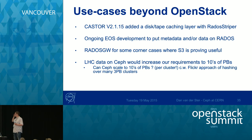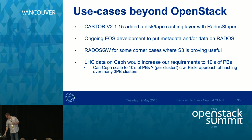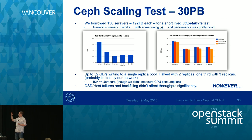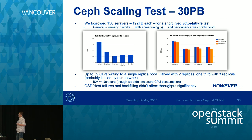Can Ceph scale to tens of petabytes per cluster? We don't have the luxury of what Yahoo Flickr did — running many separate three-petabyte clusters and hashing across them. We decided to try running a 30-petabyte Ceph cluster using the yearly hardware delivery for our EOS and Castor storage systems. I got the chance to borrow them for a month and installed Ceph on them to see what happens. In general, it worked. There was some tuning required and performance was pretty good.